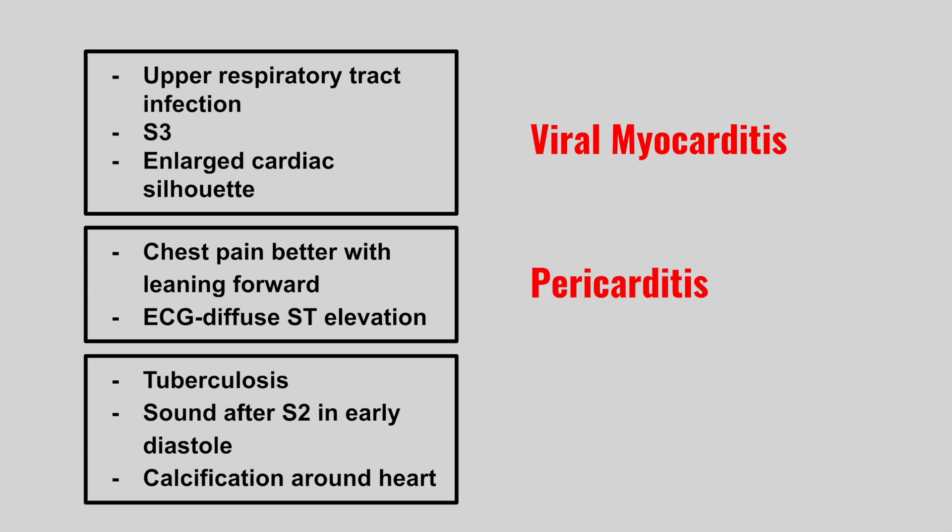The next one is someone who has tuberculosis. They have a sound after S2 in early diastole and have calcifications around the heart. This is constrictive pericarditis.